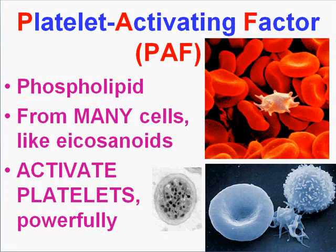Another big player in the acute inflammation saga is platelet activating factor. It's probably even a bigger player in the coagulation saga, but the two are tied together. Platelet activating factor, or PAF, is a phospholipid. It is made by a whole wide variety of cells, like the eicosanoids are.